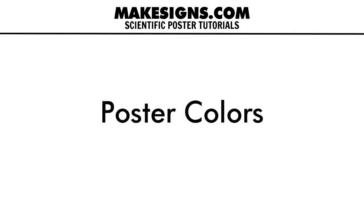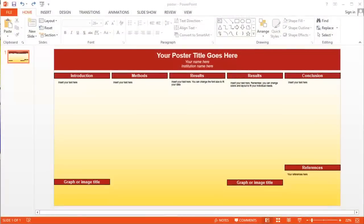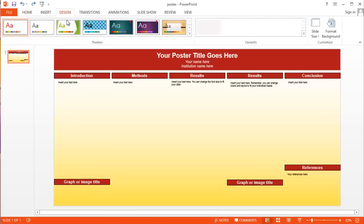Now that we've picked our template and sorted out sizes, the next thing to talk about is color. But before we talk about colors in general, I want to show you how to select between different preset color combinations in our free templates. It's actually pretty easy to do. Just open your PowerPoint template, click the design tab at the top of the screen, then click the colors tab.